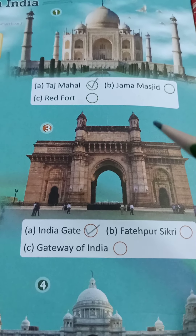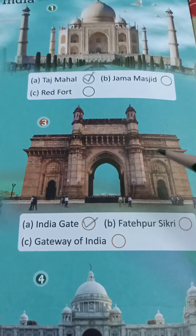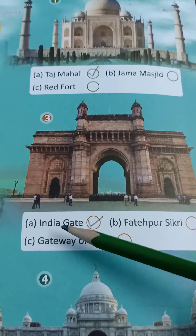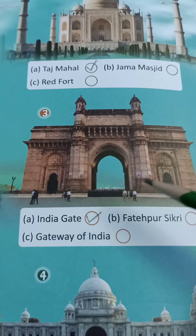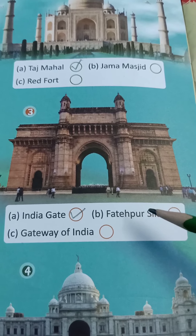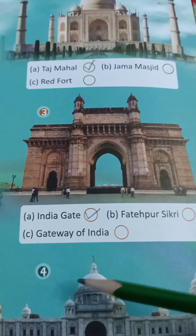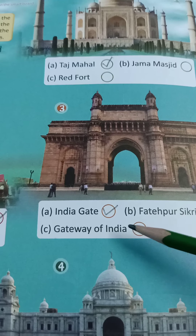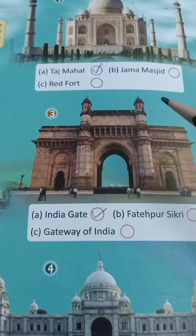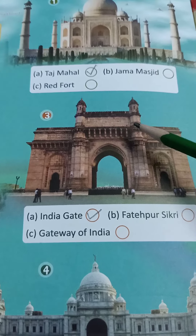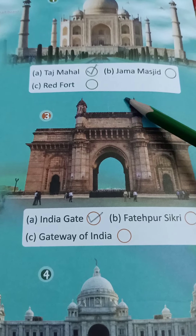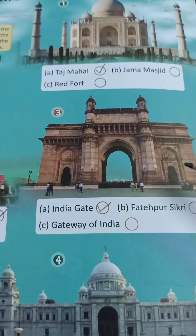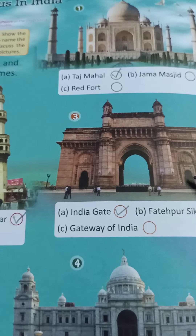Which picture is this, children? The options are: India Gate, Fatehpur Sikri, Gateway of India. This is India Gate. Put a right tick — India Gate.